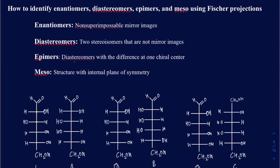Enantiomers are going to be the non-superimposable mirror images. What that really means is if you put a right hand in front of the mirror, what you see inside the mirror is going to be your left hand. The right hand and left hand are not superimposable on one another, but they are mirror images of one another. You can talk about shoes as well — if you put your left foot shoe in front of the mirror, what you see inside the mirror is the right foot shoe. They're not superimposable, but they are mirror images of one another.